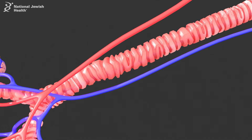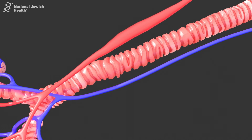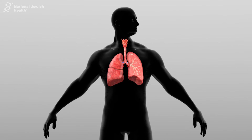the bronchial arteries increase in size and form anastomoses with the pulmonary arterial circulation. With mechanical trauma to the lung, these enlarged vessels may rupture, leading to hemoptysis.